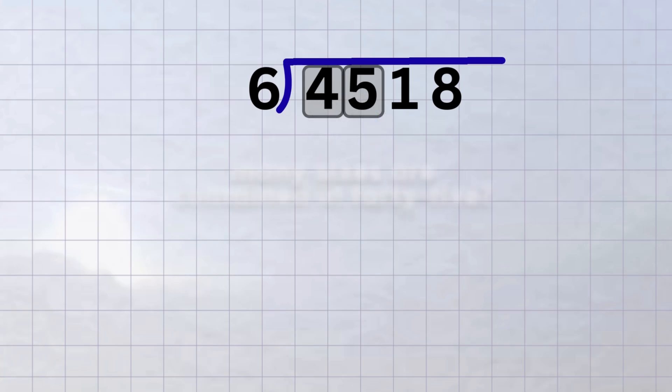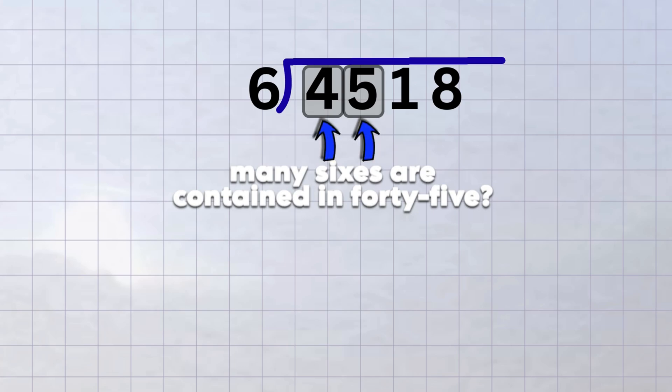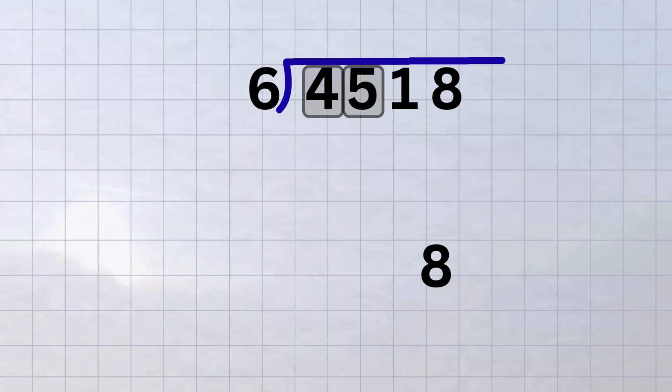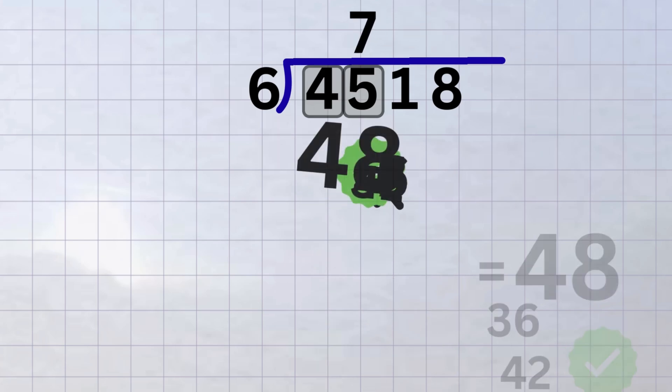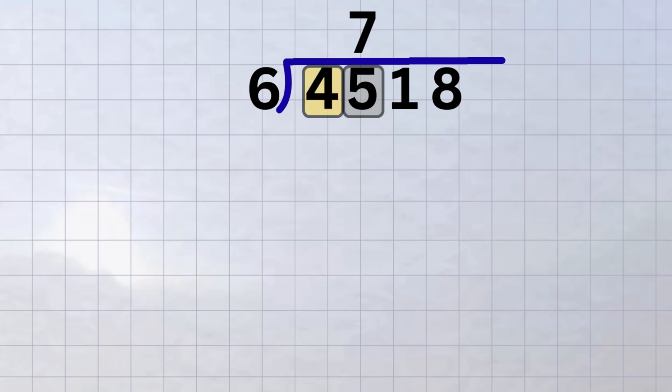Now we ask, how many sixes are contained in forty-five? Let's make a guess. If we guess eight, we can check by multiplying six times eight equals forty-eight. But forty-eight is greater than forty-five, so that guess was too big. If we guess six, six times six equals thirty-six. That's less than forty-five, so it fits, but it's not the closest. The best fit is seven, because six times seven equals forty-two, which is the closest we can get without going over. So we write the seven in the quotient above the five.